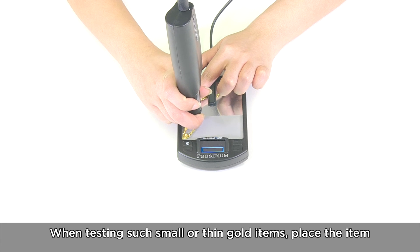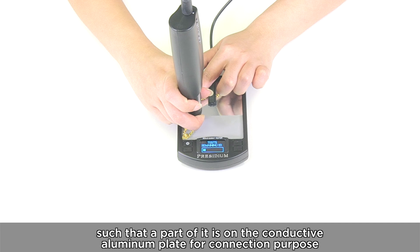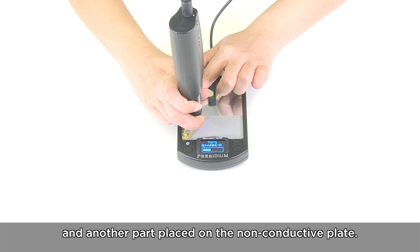When testing such small or thin gold items, place the item such that a part of it is on the conductive aluminum plate for connection purpose and another part placed on the non-conductive plate.